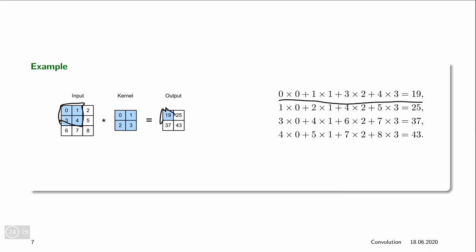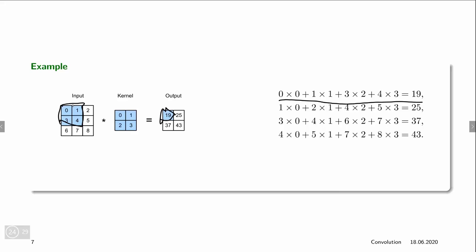So we have 0 times 0 plus 1 times 1 plus 3 times 2 plus 4 times 3 in order to get 19. And then once we have computed this we move the kernel one over to the right in order to compute the next value in a similar fashion to get 25.